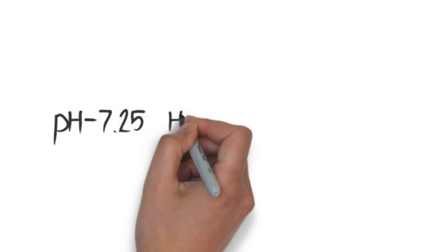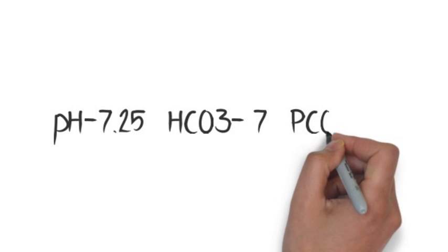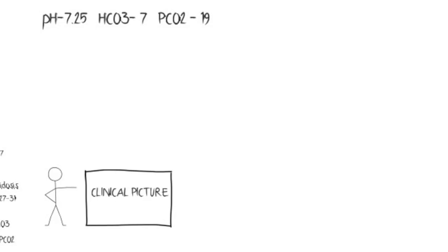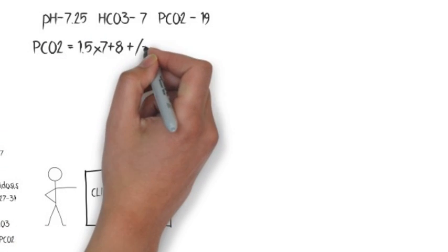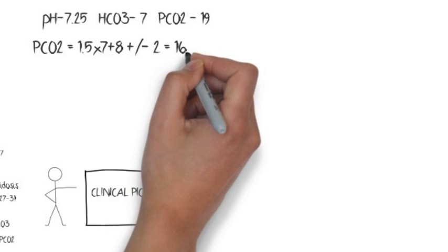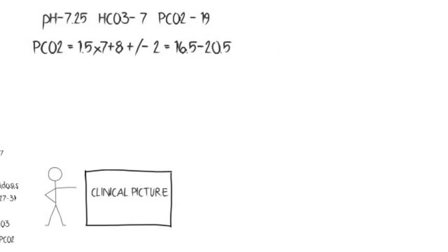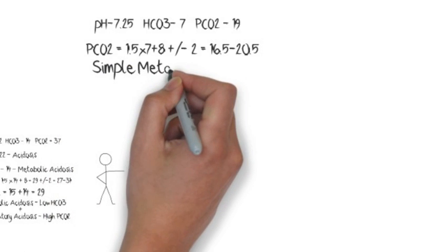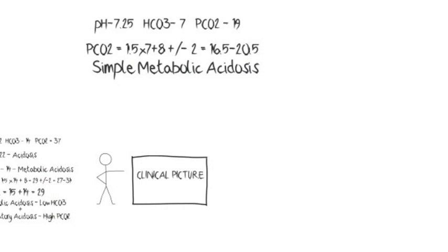In the next ABG, pH is low — acidosis — bicarb is low — metabolic acidosis — and pCO2 is 19. According to the Winters equation, this is appropriately compensated, so it is simple metabolic acidosis.